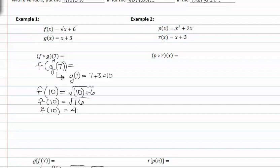In example two, we have p of x is equal to x squared plus 2x, and r of x is equal to x plus 3. We want p of r of x. So first we need to find r of x. We know that to be x plus 3, so now we've got p of x plus 3.